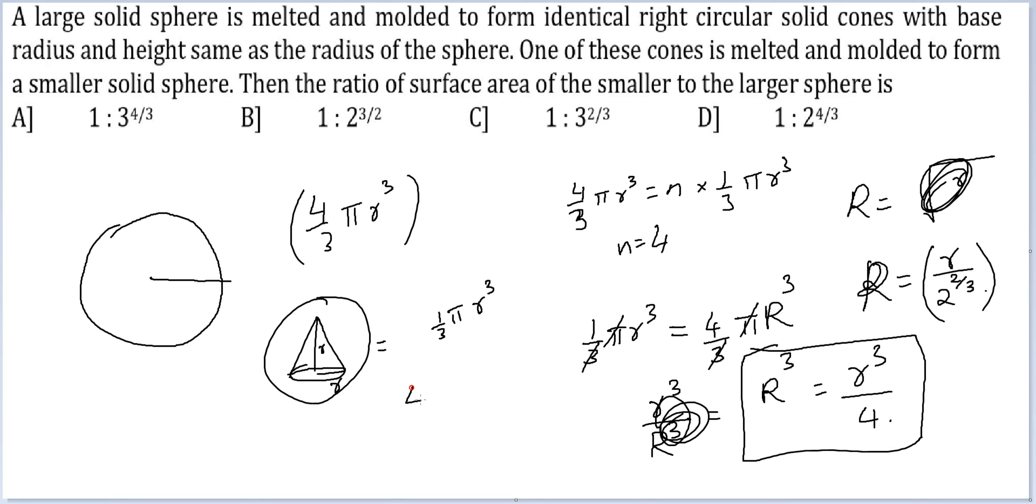So the surface area here is 4 pi r square, R square by 2 raised to the power 4 by 3. So the whole thing divided by 4 pi R square.